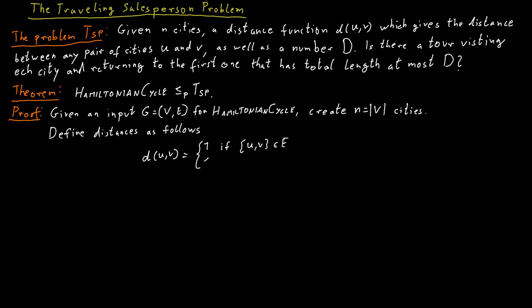And otherwise, we say that the two cities, u and v, have distance infinity, or some very large number. We are now asking whether this constructed set of n cities with this distance function has a tour of length at most n.